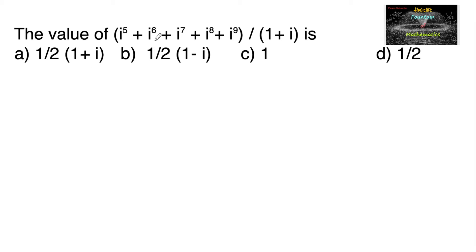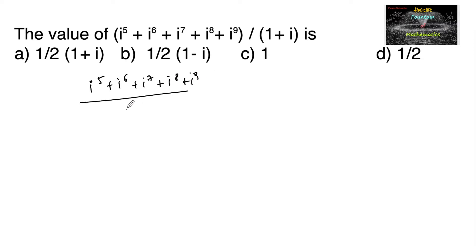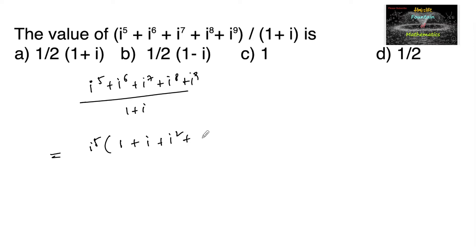The value of i⁵ + i⁶ + i⁷ + i⁸ + i⁹ upon 1 + i, which is equal to, by taking i⁵ common: 1 + i + i² + i³ + i⁴, upon 1 + i.